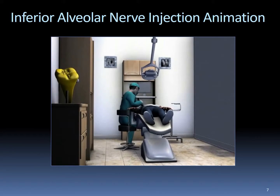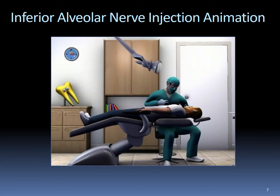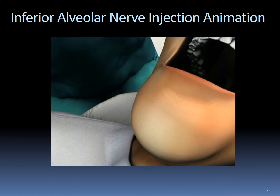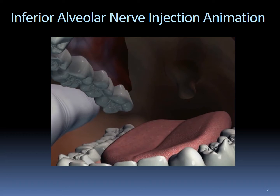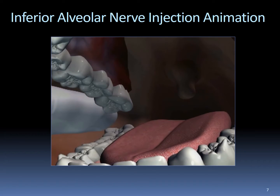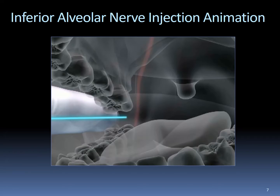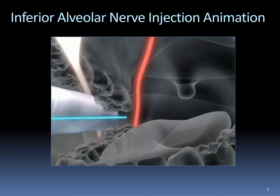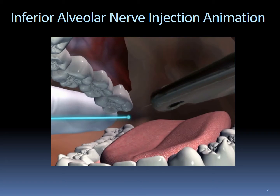Aspiration potential is 15%. A right-handed operator performing an inferior alveolar block on the patient's right side is seated at the 8 o'clock position, with the patient reclined to minimize the possibility of syncope. The patient's mouth is opened widely with the head turned slightly toward the operator. The operator's finger palpates the greatest depth of the coronoid notch and moves laterally to make the tissue taut, held parallel to the mandibular occlusal plane so that the middle of the finger coincides with the deepest part of the coronoid notch. Position the syringe over the premolar teeth on the opposite side, just above the plane of occlusion, and place the needle at the insertion point within the depression — about one-fourth to one-half the distance from the raphe to the finger.